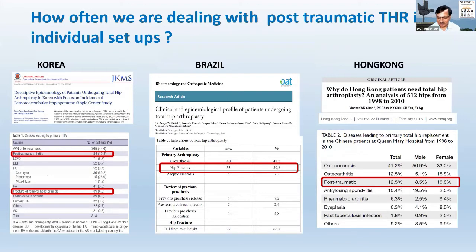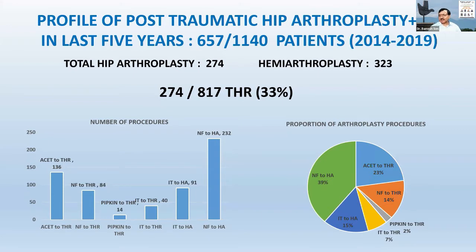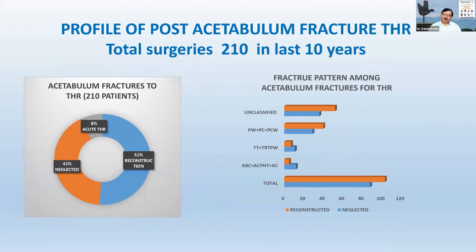Looking at my own data over the last five years — approximately 1,100 hip replacement procedures — 657 were post-traumatic. Of those, we had 274 total hip replacements and more than 300 hemiarthroplasties. Among the total hip replacements, there were 136 acetabular cases, 84 femoral neck fractures, 14 Pipkin fractures, and 40 intertrochanteric fractures going to hip replacement. The proportion is roughly 40–50% hemiarthroplasty and 50% total hip arthroplasty.